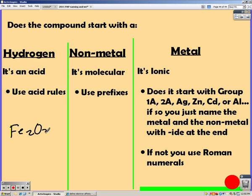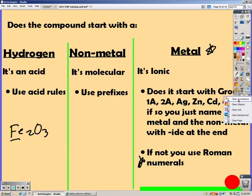So if you had Fe2O3, you would say it doesn't start with hydrogen, so it's not an acid. It doesn't start with a non-metal, it's a metal, so it's ionic. It's not in group 1A, 2A, silver, zinc, cadmium, or aluminum, so I need to use roman numerals.